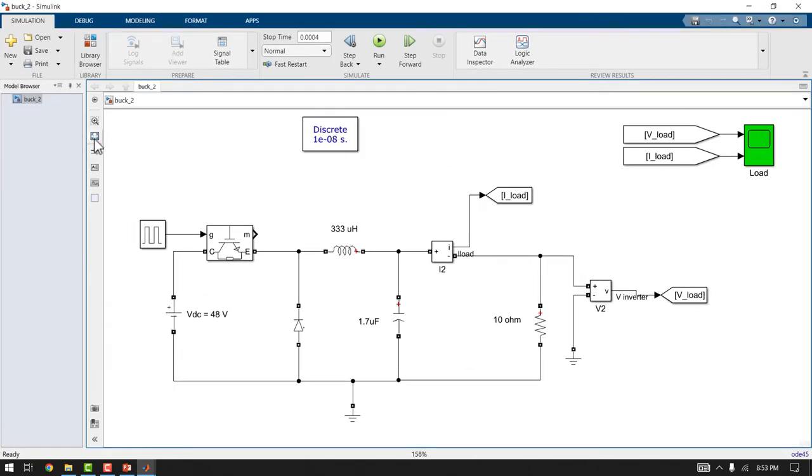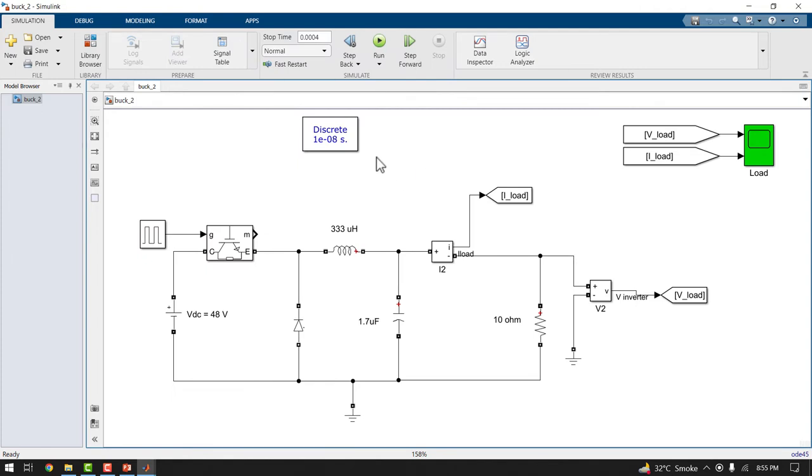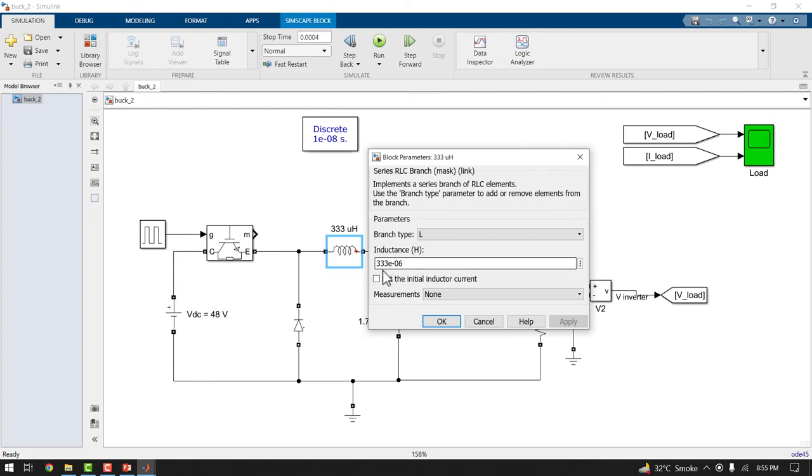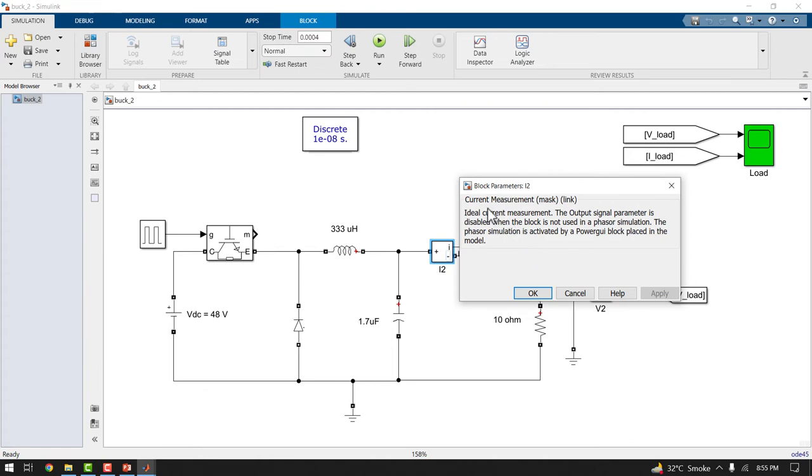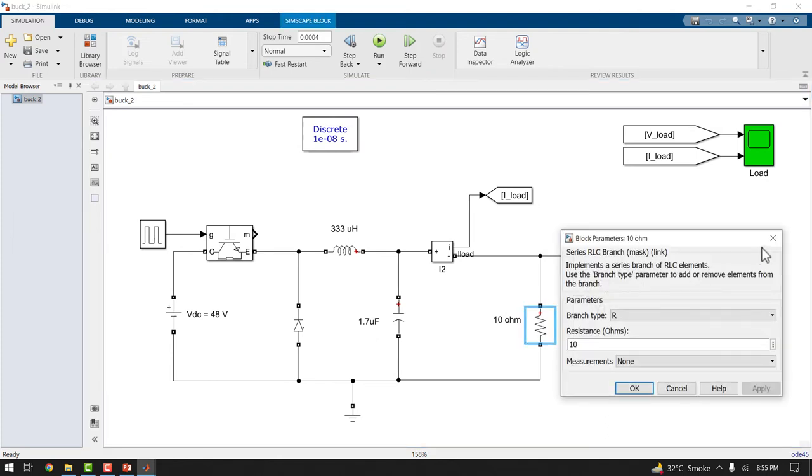This is a buck converter circuit. The supply voltage is 48 volts. For duty ratio, use the continuous pulse generator. Set the time period which is reciprocal to the frequency. As the frequency is 50 kilohertz. This is the power gui. It is set to discrete. You can also set it to continuous from these options. Set the inductor value to 333 microhenry. Set the capacitor value to 1.7 microfarad. This block is an ammeter and this block is a voltmeter. Load resistance is 10 ohms.